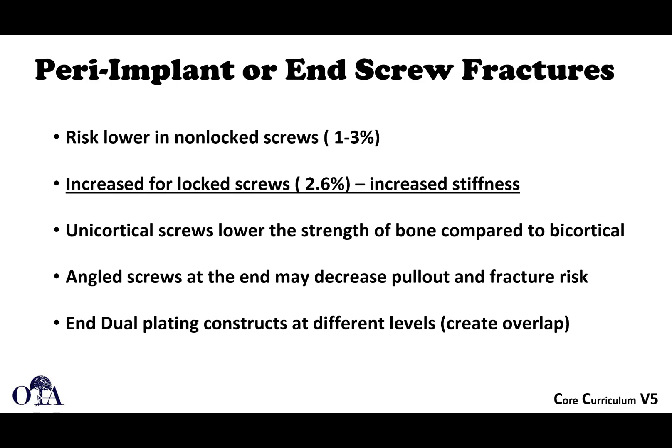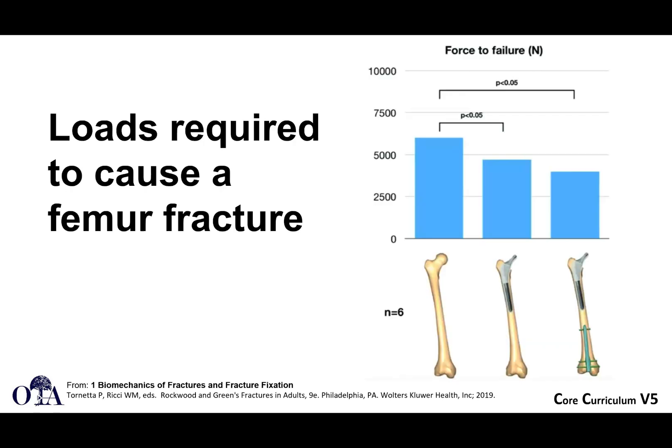For peri-implant fractures at the end of a plate and screw construct, the risk is a little lower with an unlocked screw because the screw can toggle slightly, as opposed to a locked screw where stiffness is greatly increased. A unicortical screw is less stiff and lowers the strength of the bone compared to bicortical. Angled screws can potentially decrease pull-out and fracture risk. With two plates — for example in a bicondylar tibial plateau fracture — one strategy is to make the plates different lengths so they don't end at the same spot, creating overlap to distribute the stress riser.